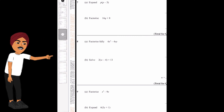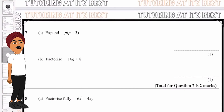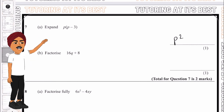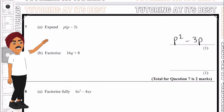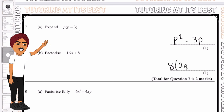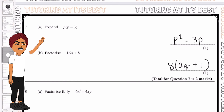Let's start with question 7a. We have p times p which is p², and p times minus 3 is minus 3p. For part b, 8 goes into both 16 and 8, so we have 8 multiplied by 2q inside the bracket, plus 8 times 1 is 8, giving 8(2q + 1).